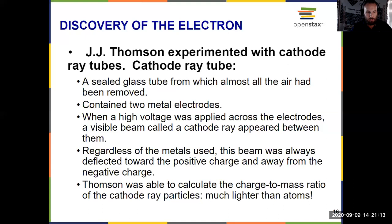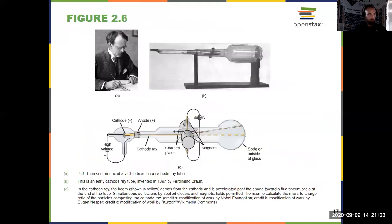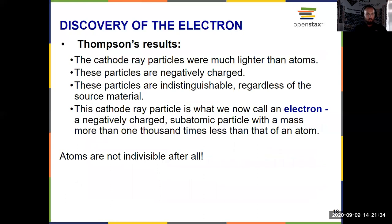And Thompson did some calculations to figure out that we did, in fact, have some subatomic particles, something with a charge to mass ratio that was much lighter than an atom. And here's a picture of Thompson in his cathode ray tube, a diagram explaining exactly what went on there. So we knew we had something smaller than an atom.